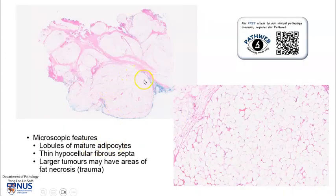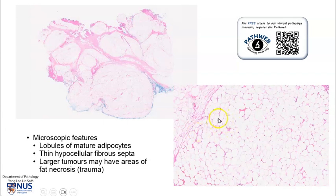Microscopically, they are composed of lobules of mature adipocytes, and sometimes we can see thin fibrous septa that are made up of collagen. Here, we can see the adipocytes, which appear very empty because the fat is washed out during processing of the tissue into microscopic slides, and the nuclei are compressed to the edge of the cell.